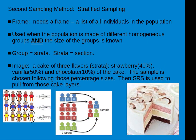The second sampling method is stratified sampling. This also needs a frame. It's used when the population is made of different homogenous groups and the size of the groups is known. Groups means strata, and strata is a section. The image here is a cake of three flavors — strawberry, vanilla, and chocolate — where strawberry is 40%, vanilla is 50%, and chocolate is 10%. The sample is chosen following these percentages, so 40% of individuals in the sample come from the strawberry layer, 50% from vanilla, and 10% from chocolate. In that way, the sample has the same ratio as the population as a whole.